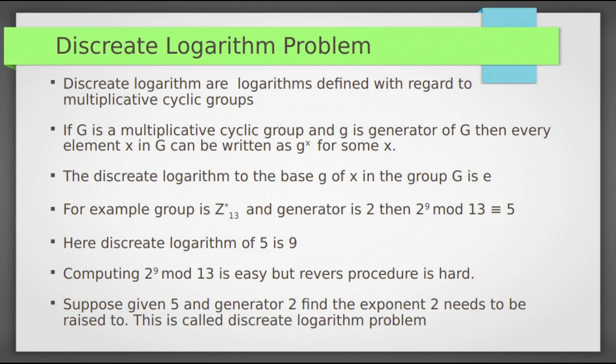Diffie-Hellman key exchange is based on discrete log problem. Let us see what is this discrete logarithm problem. Discrete logarithms are logarithms defined with regard to multiplicative cyclic groups. If G is a multiplicative cyclic group and g is generator of G, then every element x in G can be written as g^e for some e. The discrete logarithm to the base g of x in the group G is e.